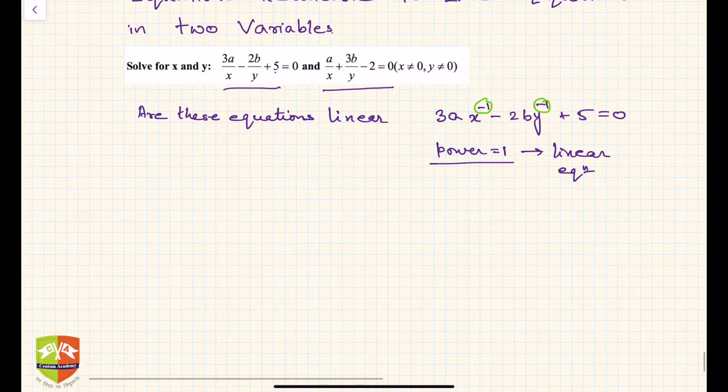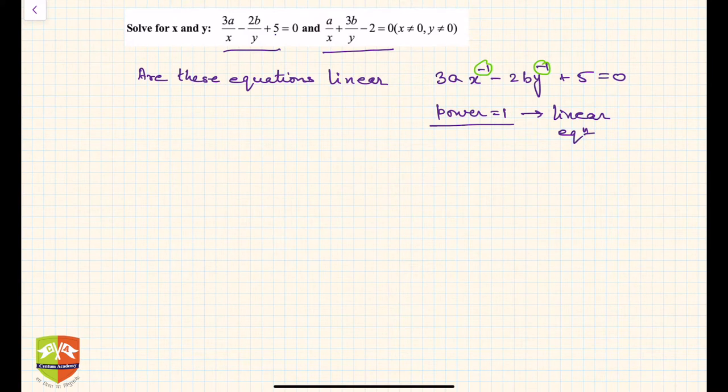This is how it is done. You assume 1 upon x to be equal to u, and 1 upon y to be equal to v. Now rewrite the equations after substituting for x and y.